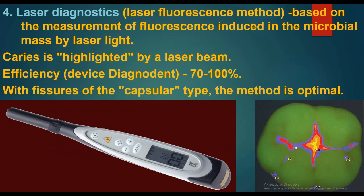The next method is laser diagnostics, or laser fluorescence method, which detects microbial mass by laser light — caries is highlighted by a laser beam. The device used is called DIAGNOdent, with efficiency from 70 to 100%. For fissures of the capsular type, this method is optimal.